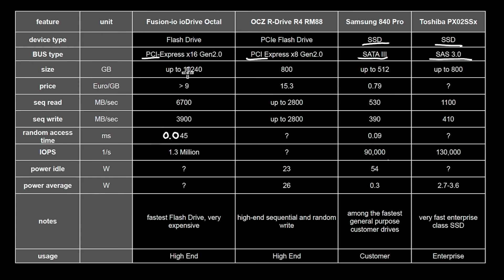Another vendor in this space is OCZ — it's even a little more expensive. Here you get up to 2.8 gigabytes per second, and the other numbers are a little unclear. This is probably more like high-end sequential and random write. So there are a couple of options in this space.